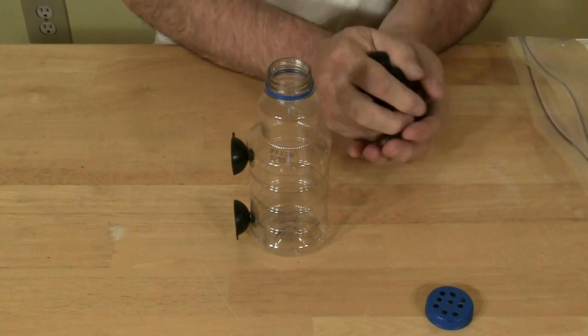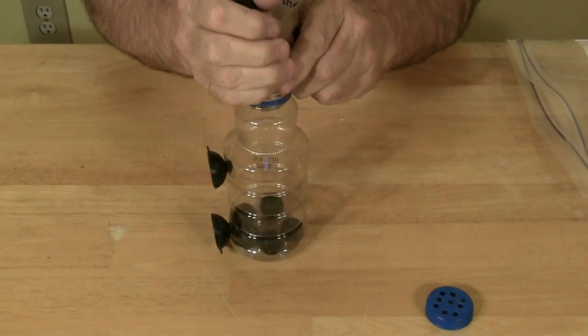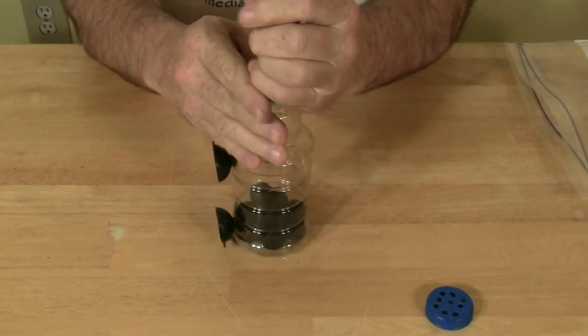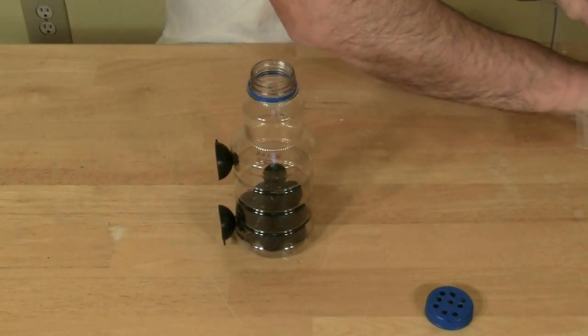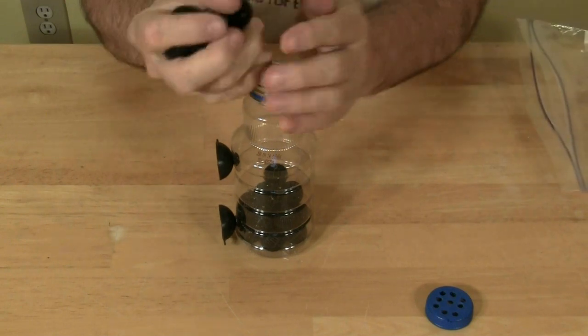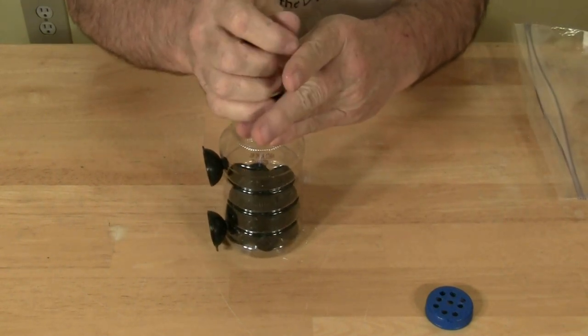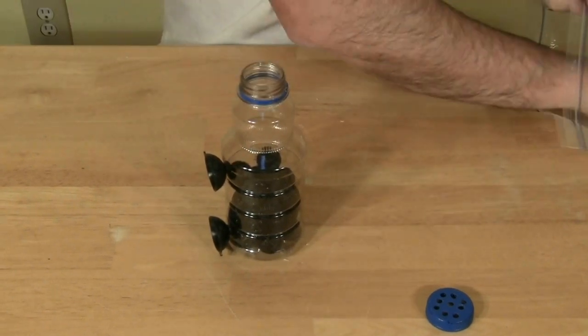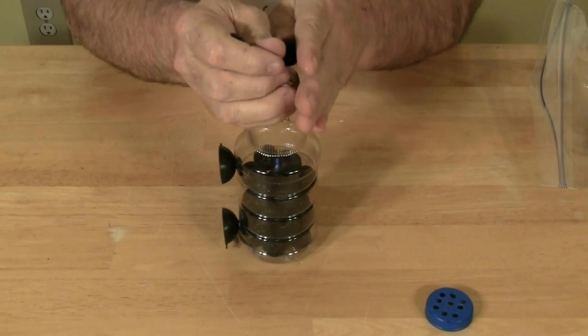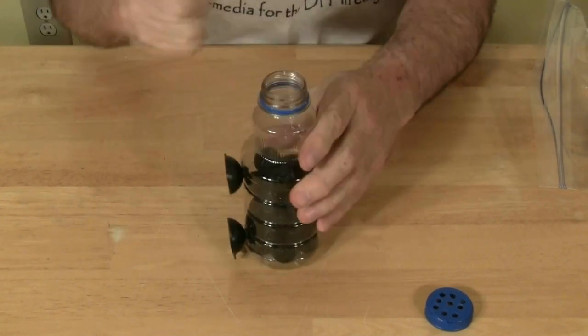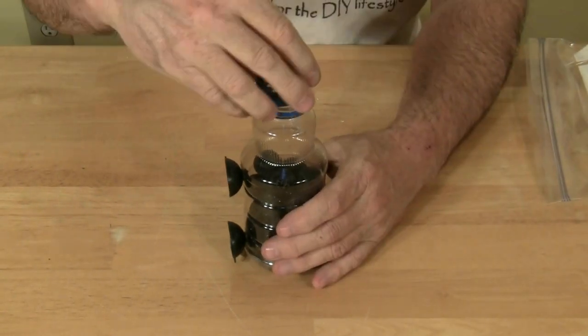Next, we place the media inside the bottle. Fill it up about half to two-thirds of the way full and place the cap.